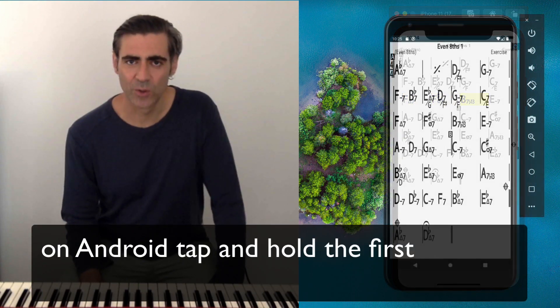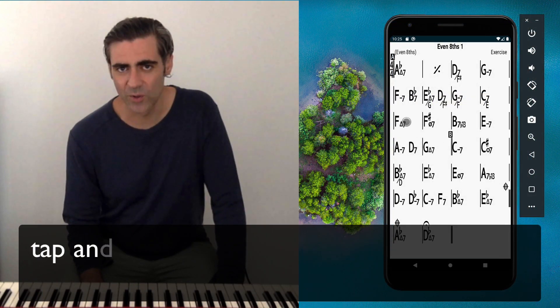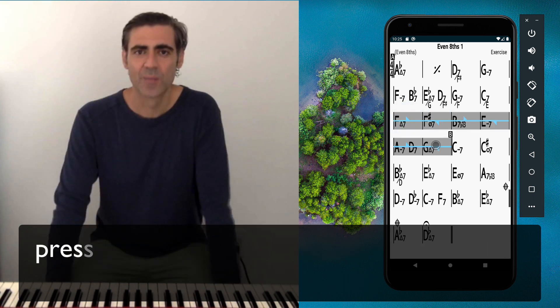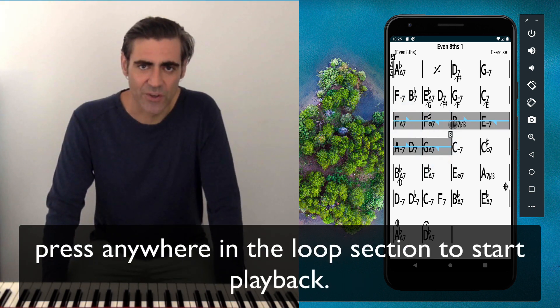On Android, tap and hold the first measure and then tap and hold the last measure of the section you'd like to loop. Press anywhere in the loop section to start the playback.